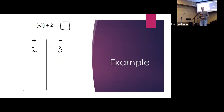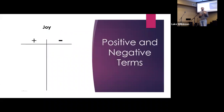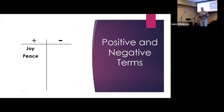I want to make a connection to the Bible — how does this have anything to do with the Bible? What I decided to do was pick some words out of the Bible and put them on the chart. So: joy — that's a good one, that's positive. Another word is peace — positive, definitely. The next one: anger — negative, right? That one goes on the negative side.